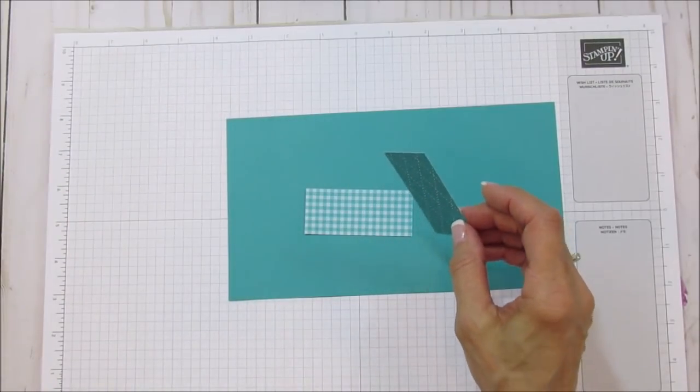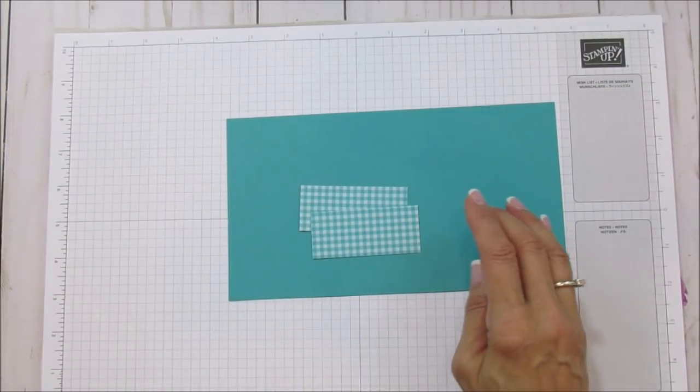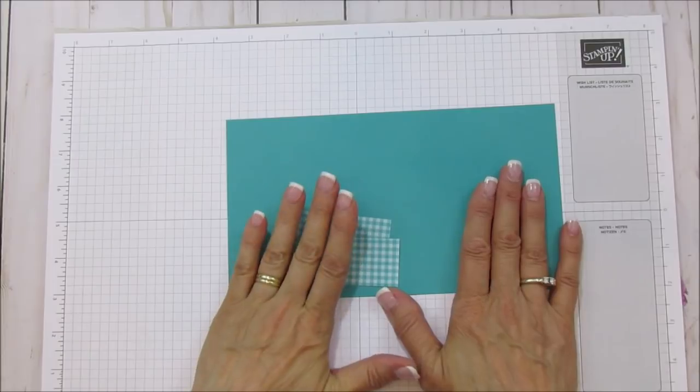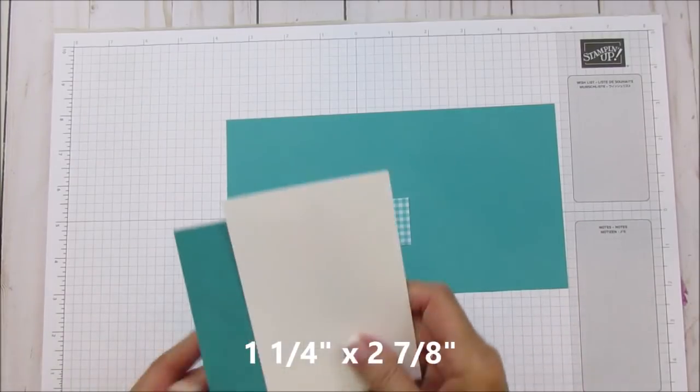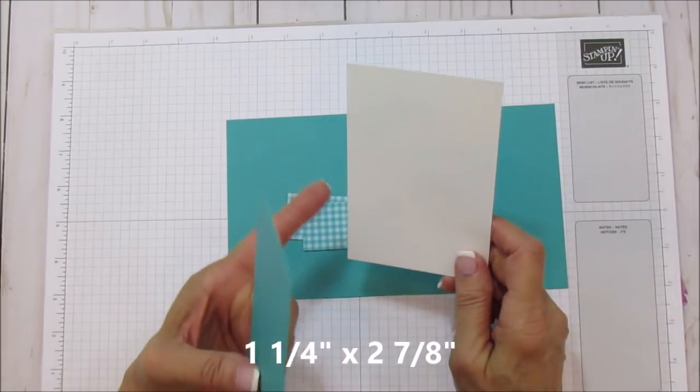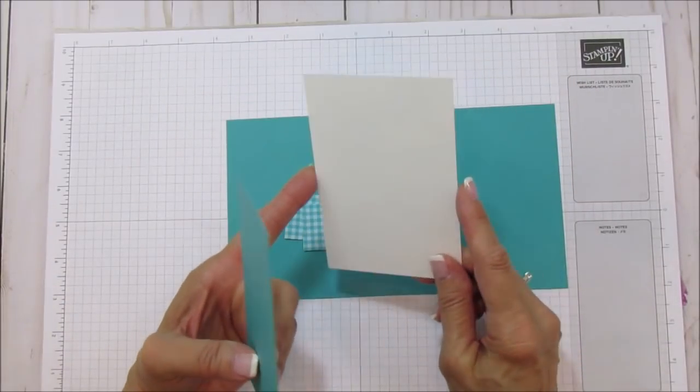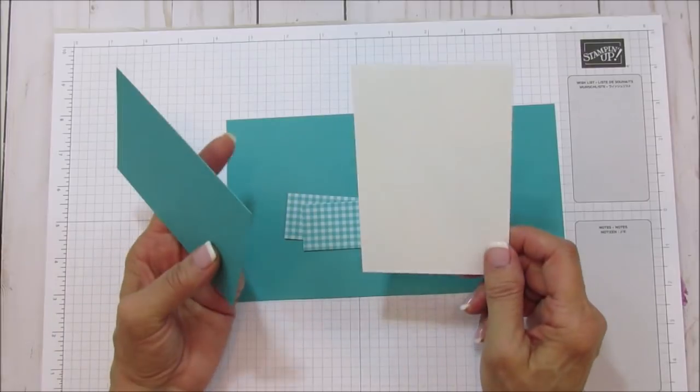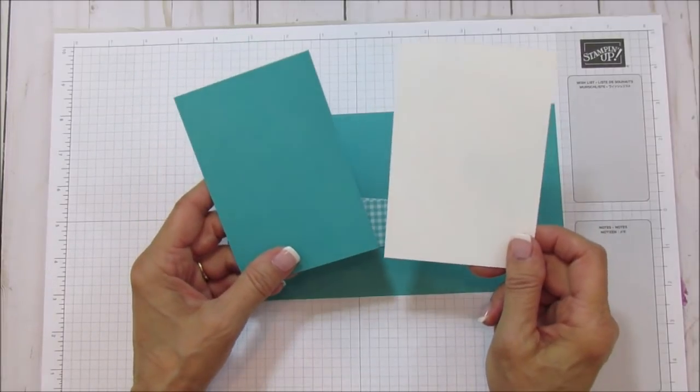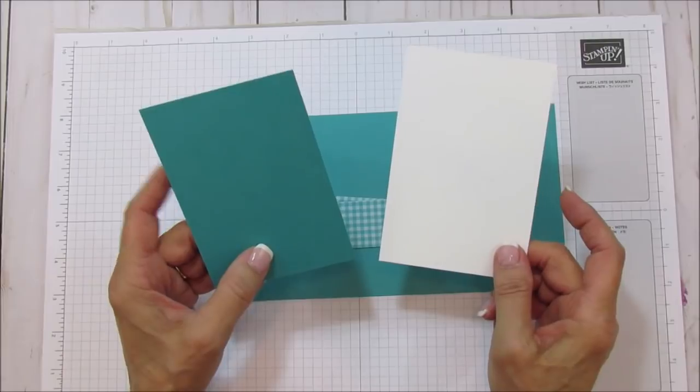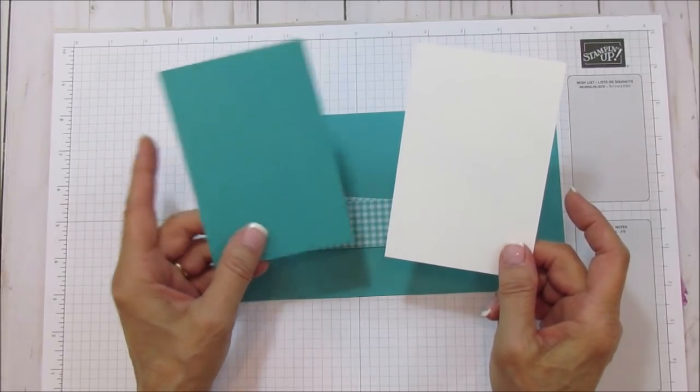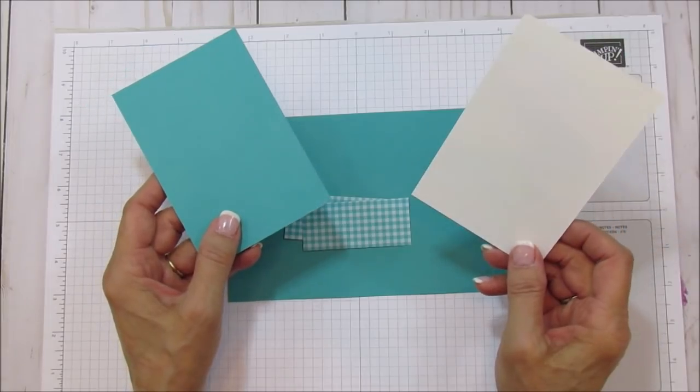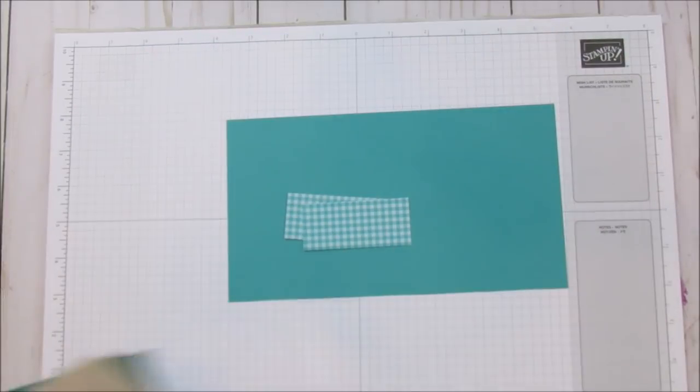These pieces are one and a quarter by two and seven eighths. Then you'll need a piece of whisper white. I'm using the thick, which I've gone to for pretty much everything since I do so much 3D. The thick always works so much better for me. Then this is another piece of Bermuda Bay to cut out our dies.